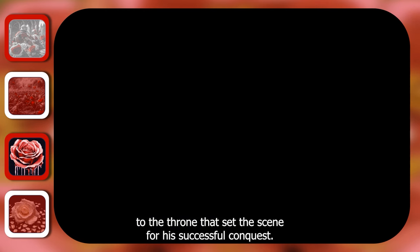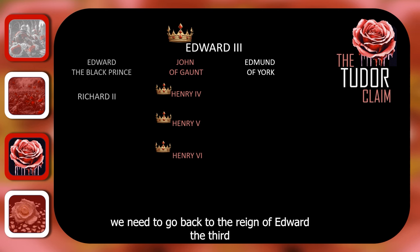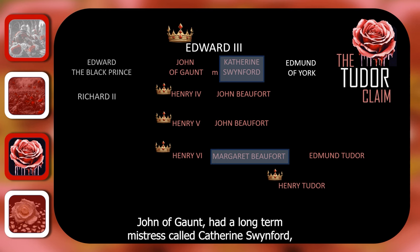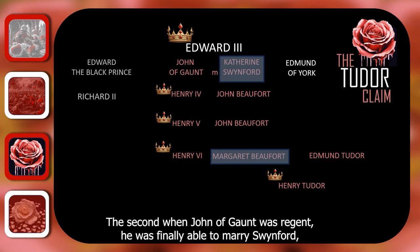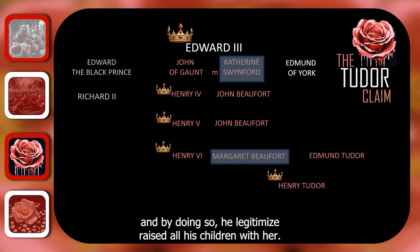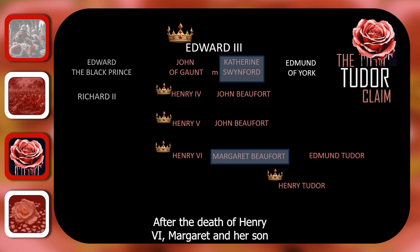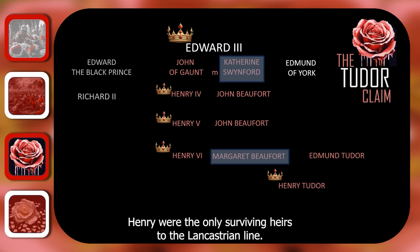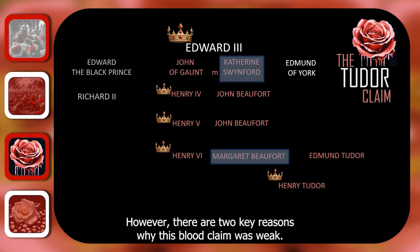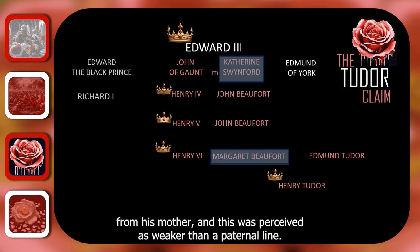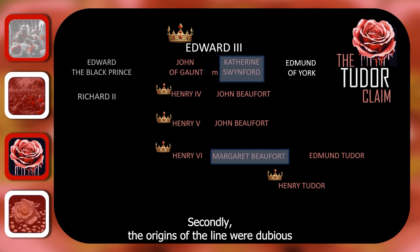To understand Margaret Beaufort's connection to the House of Lancaster, we need to go back to the reign of Edward III. Edward III's son John of Gaunt had a long-term mistress called Catherine Swinford, who bore him several illegitimate children. During the reign of Richard II, when John of Gaunt was regent, he was finally able to marry Swinford, and by doing so he legitimised all his children with her — they became the House of Beaufort. Margaret was the great-granddaughter of John of Gaunt and Catherine Swinford. After the death of Henry VI, Margaret and her son Henry were the only surviving heirs to the Lancastrian line. However, there are two key reasons why this blood claim was weak: firstly, Henry's claim came from a maternal line, which was perceived as weaker than a paternal line; and secondly, the origins of the line were dubious, since Henry's grandfather John Beaufort had been born a bastard.